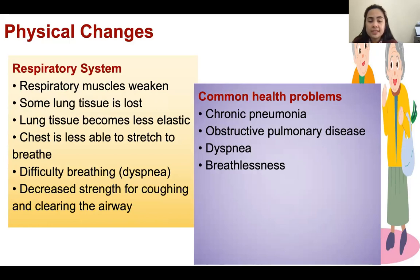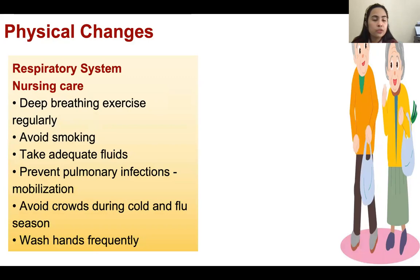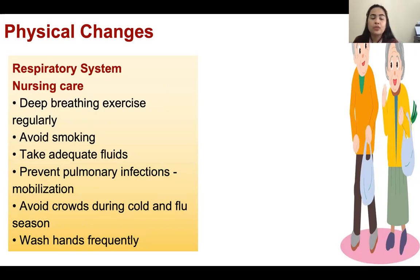For the respiratory system, they may have chronic pneumonia, obstructive pulmonary disease like COPD, dyspnea, and breathlessness. What we are going to do: exercise and deep breathing exercise, avoid smoking, take adequate fluids, prevent pulmonary infections, mobilization, avoid crowds during cold and flu seasons, and wash hands frequently.